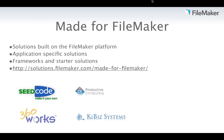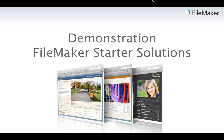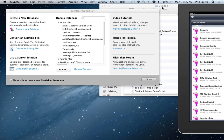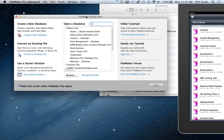In addition to FileMaker starter solutions, there are great third-party resources available, like Productive Computing's Core CRM and 360Works DocuBend for document management. There are also great frameworks from companies like Seedcode, which makes a free calendar you can plug into your solutions. And today we're here to talk about Richard Carlton Consulting's FM Starting Point — a fully functional business solution that's free to download, use as is, or customize for your own needs.